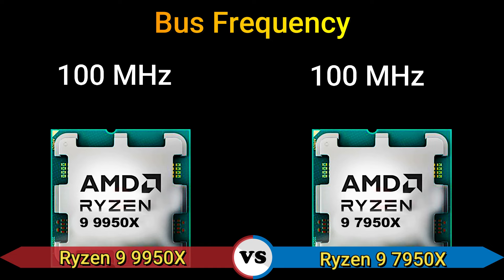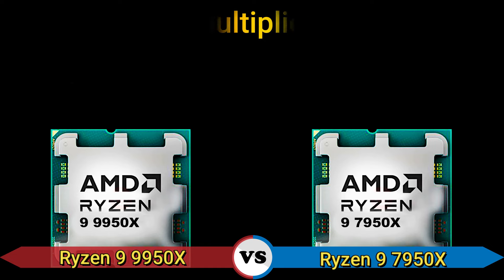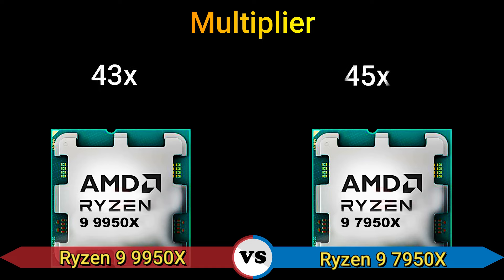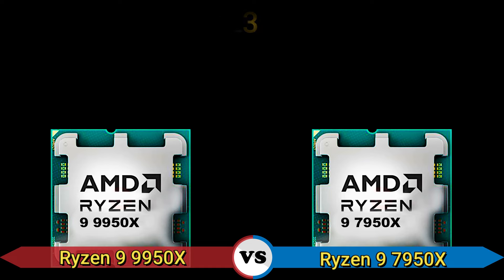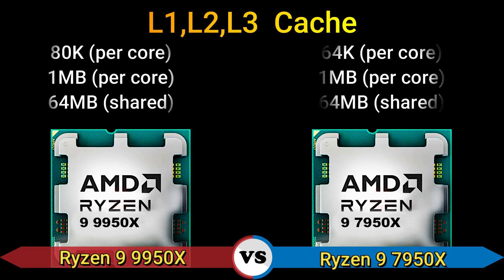Base frequency: 100 MHz. Multiplier: 43x and 45x. L1/L2/L3 cache: 80 KB per core, 1 MB per core, 64 MB shared — and 64 KB per core, 1 MB per core, 64 MB shared.